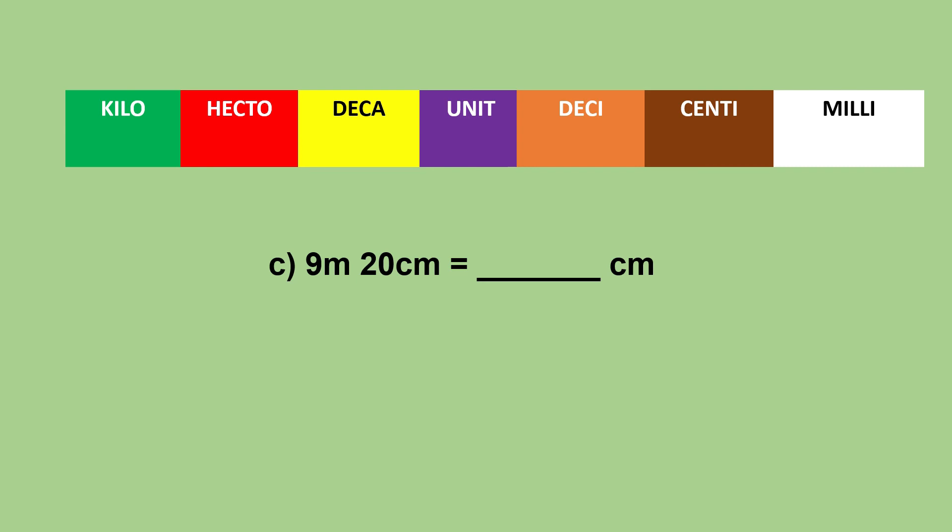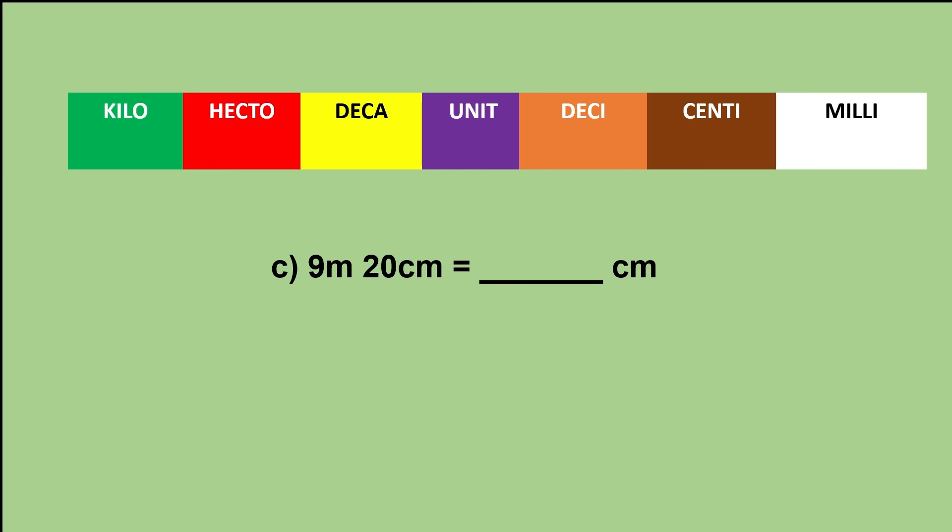The third activity: 9 meters 20 centimeters to centimeters. To convert 9 meters to centimeters, we move two steps from left to right, so we will multiply by 100. That is, 9 times 100 equals 900 centimeters, and 20 is in centimeters itself. Thus, 900 plus 20 gives 920 centimeters.